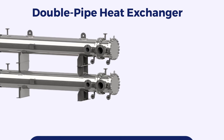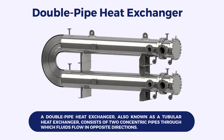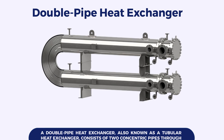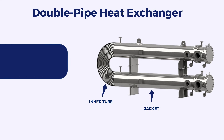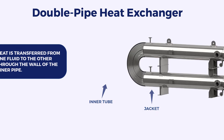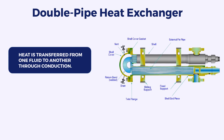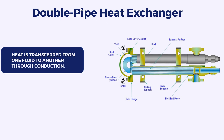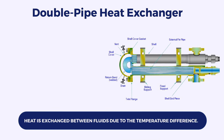Double Pipe Heat Exchanger. A double pipe heat exchanger, also known as a tubular heat exchanger, consists of two concentric pipes through which fluids flow in opposite directions. The inner pipe is known as the inner tube, while the outer pipe is called the jacket. Heat is transferred from one fluid to the other through the wall of the inner pipe via conduction. As the fluids flow through their respective paths, heat is exchanged between them due to the temperature difference.